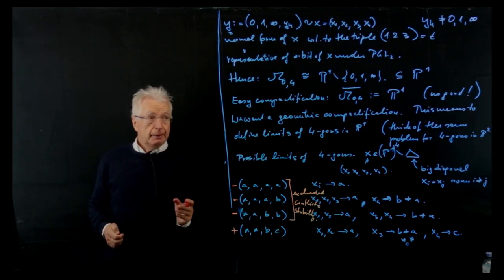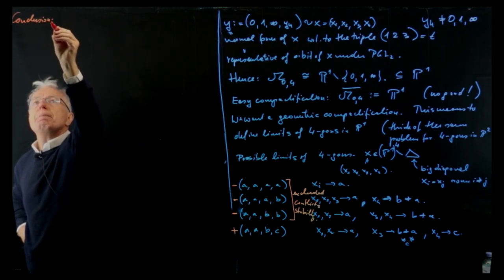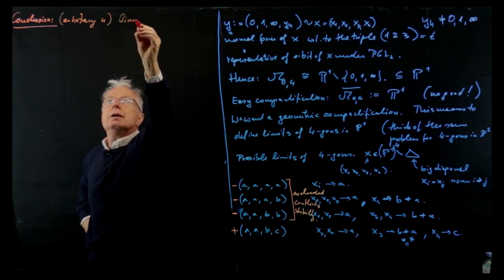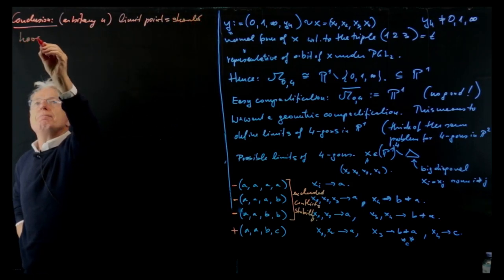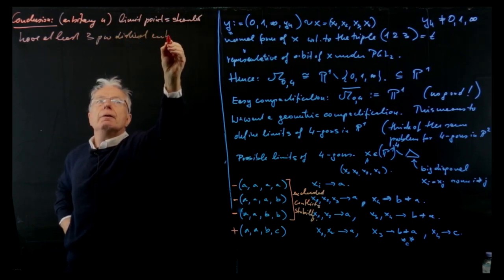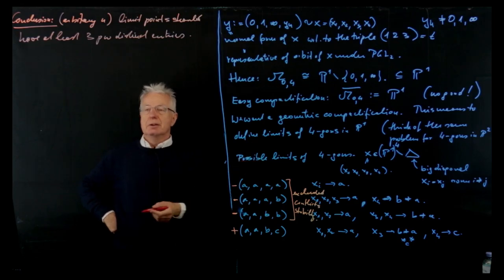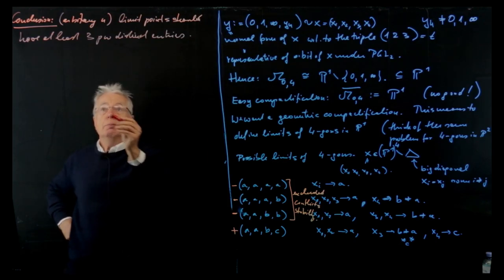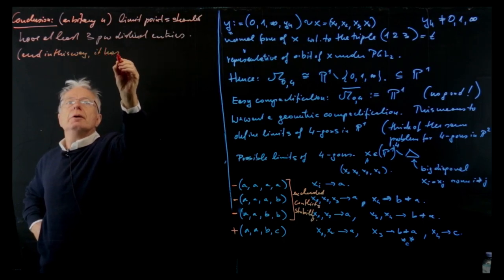The conclusion — not just for n equals 4 but for arbitrary n — is that limit points should have at least three pairwise distinct entries. That's a nice and easy argument. And if the limit point has three pairwise distinct entries, then it has again a normal form.